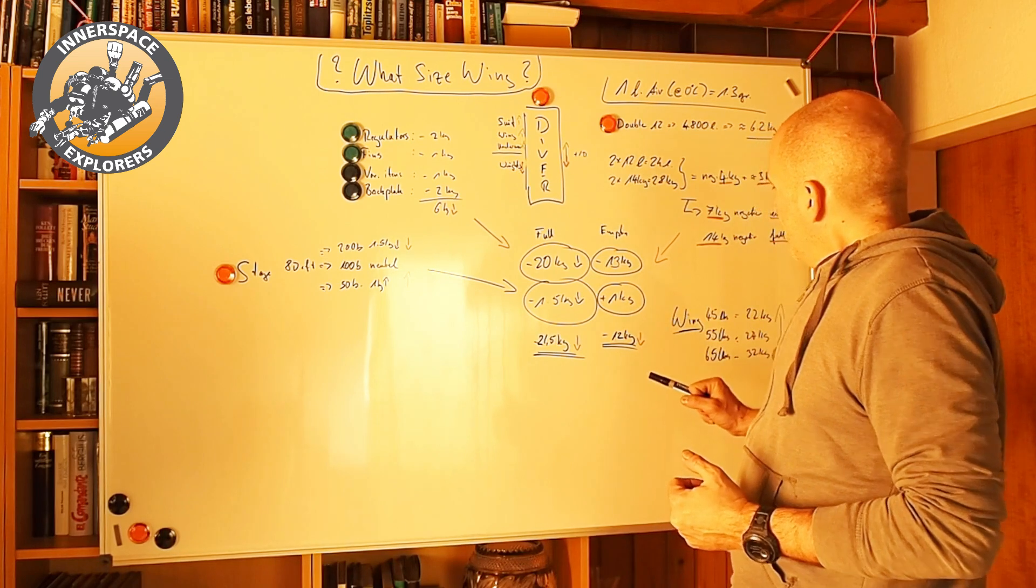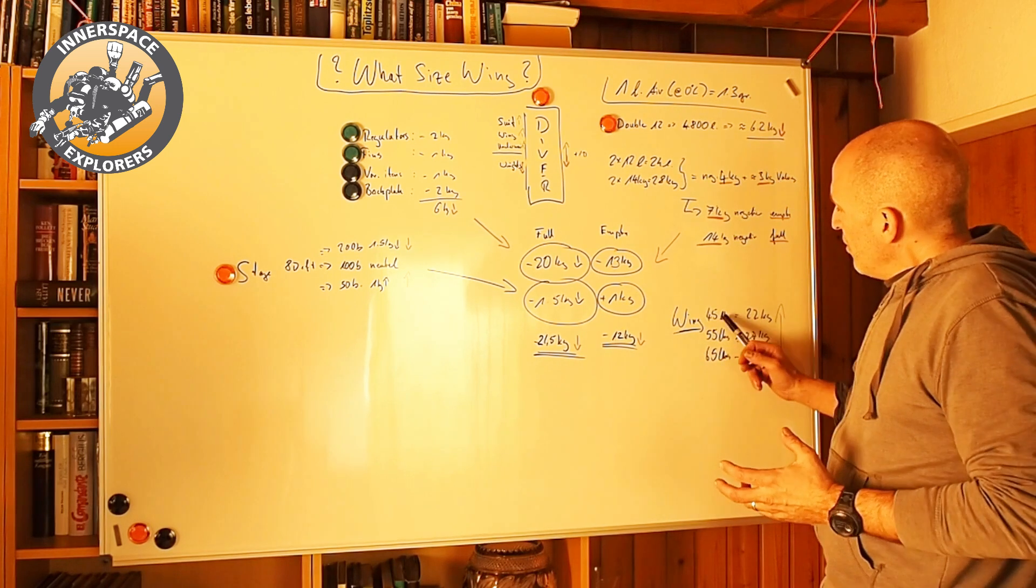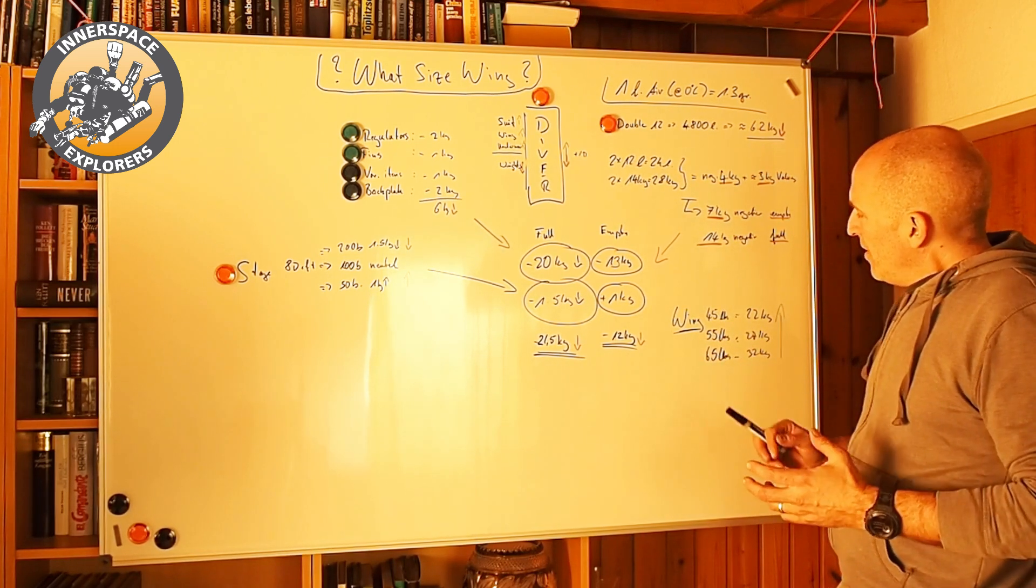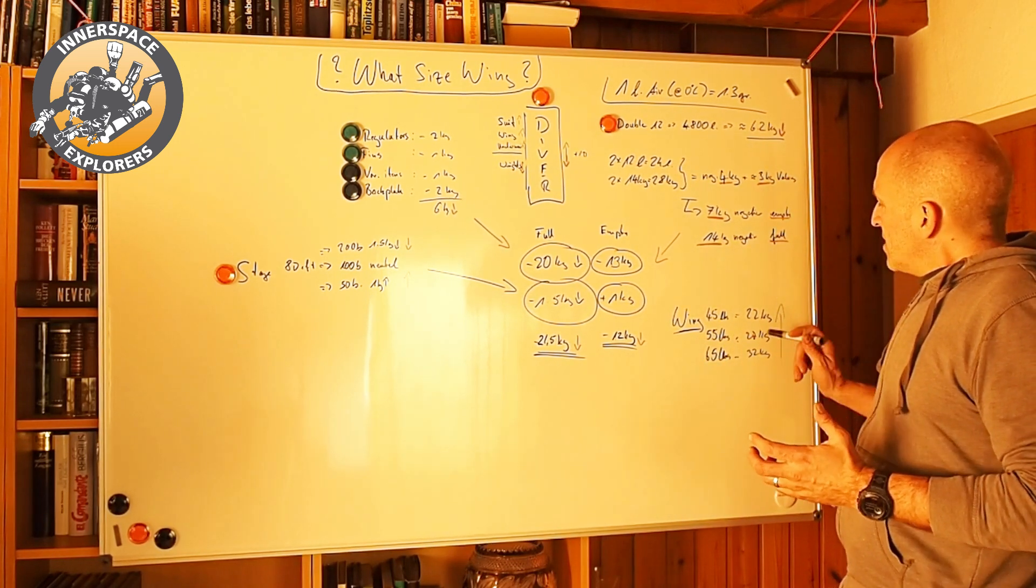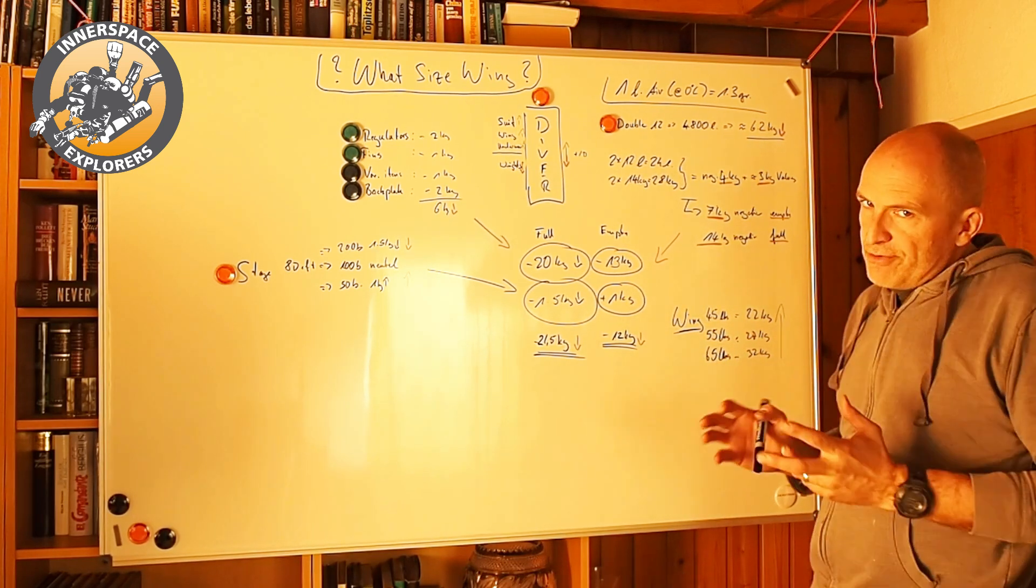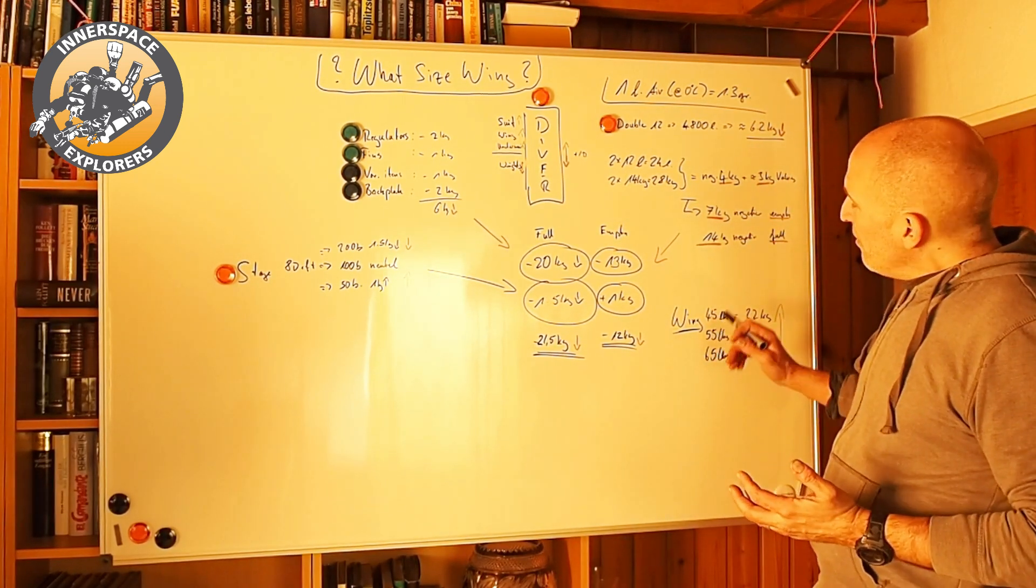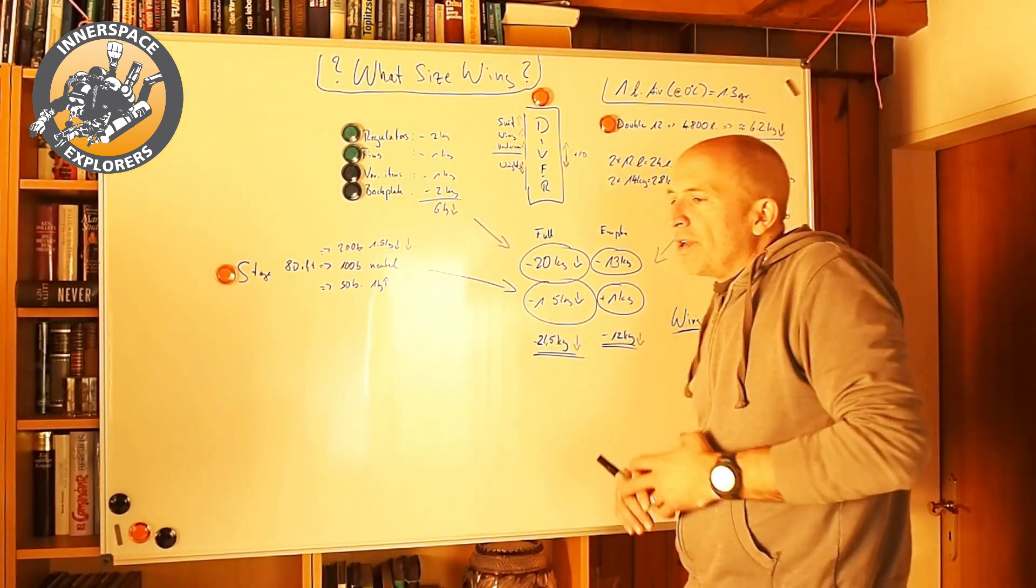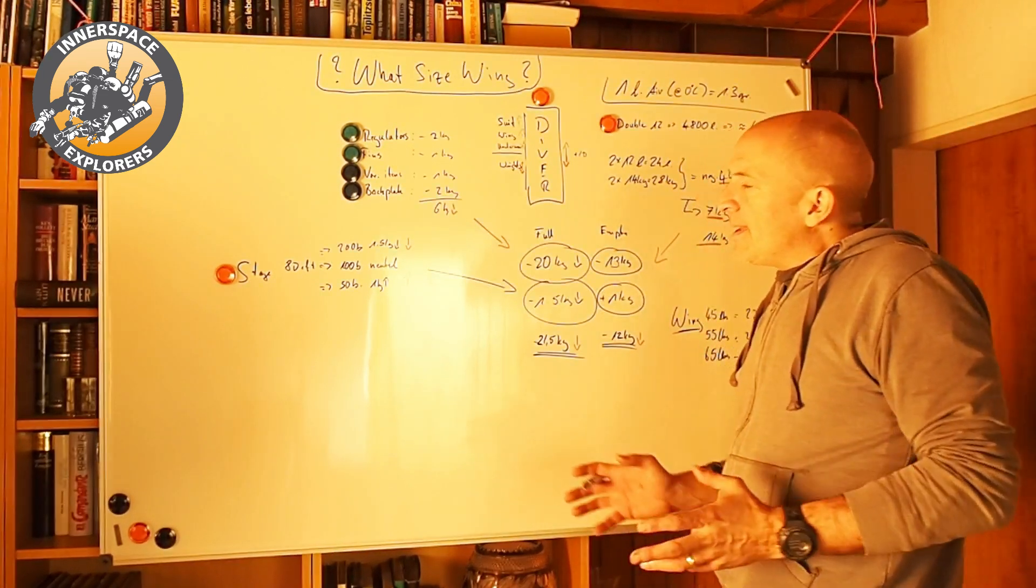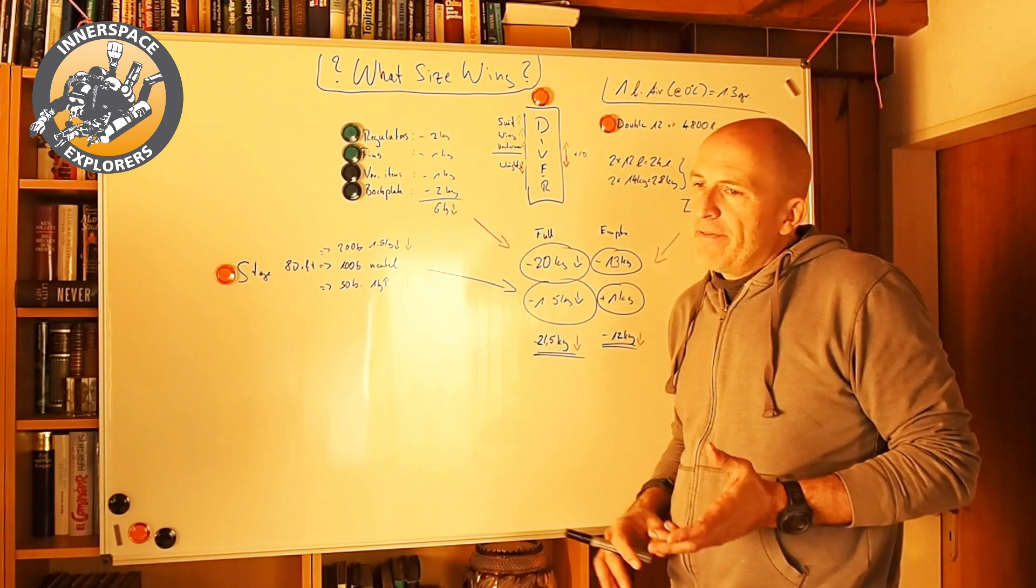So when you look at wing sizes, then the most common wing sizes are 45, 55 and 65 pounds, which means 22, 27, 35 kilograms, roughly. So what do we need? We see that the 45 pound wing, the smallest one, would still make it, but just. So if you have a little bit of a heavier regulator, if you have a proper K-fill, I don't know, 280 bars, depending on where you are, if you take these two extra reels, it could be already in the critical range.